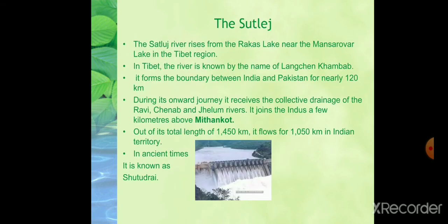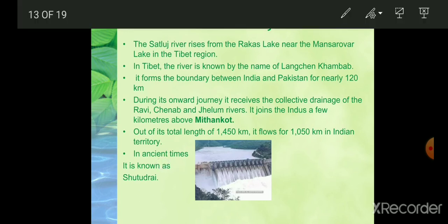Next is the Sutlej river. The Sutlej rises from Rakas Lake, near the Mansarovar Lake in the Tibet region. In Tibet the river is known as Langchen Khambab. The Sutlej flows parallel to the Indus before entering India at Shipki La. It is an antecedent river. Before entering the Punjab plain it cuts a gorge in Naina Devi hills, where the famous Bhakra Dam has been constructed. After entering the plain at Ropar it turns westwards and is joined by the Beas at Harike. During its onward journey it receives the collective drainage of Ravi, Chenab, and Jhelum rivers. It joins the Indus a few kilometers above Mithankot. It forms the India-Pakistan boundary for nearly 120 kilometers. Out of its total length of 1,450 kilometers, it flows 1,050 kilometers in Indian territory.